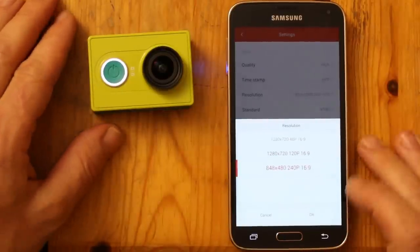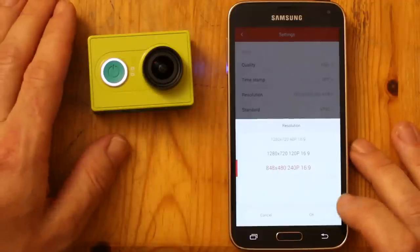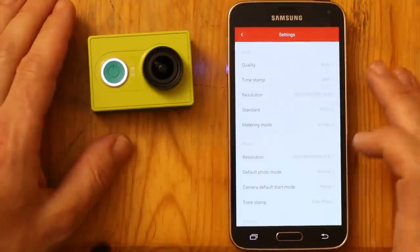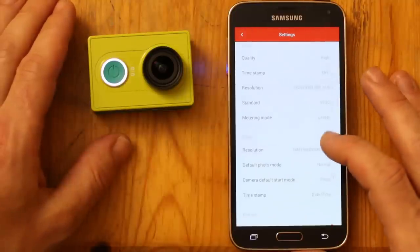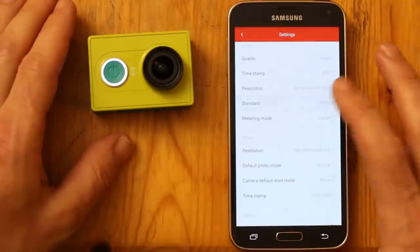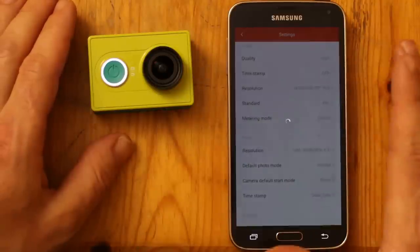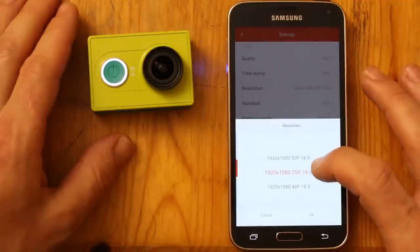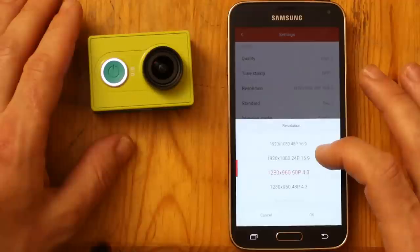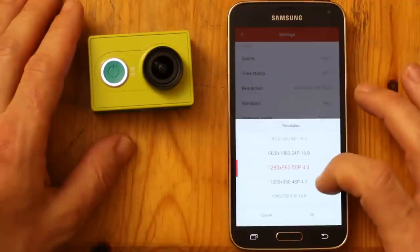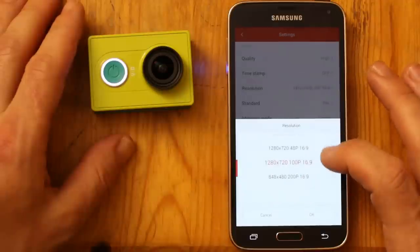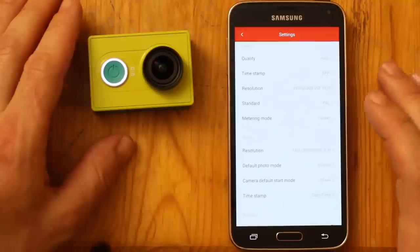It can do 848 by 480 at 240 frames per second. If you change the video standard to PAL, you get some different frame rates. You get 50 or 25 instead of 60 and 30 frames a second. And I think you get 100 frames a second and 200 frames a second down there. So, those are different if you switch it to PAL.